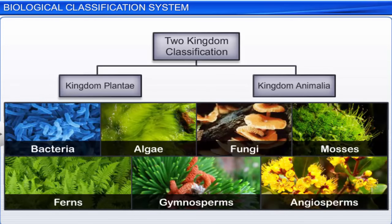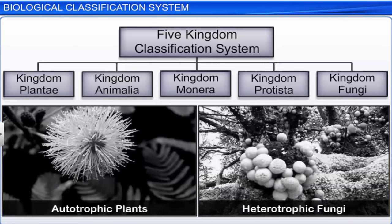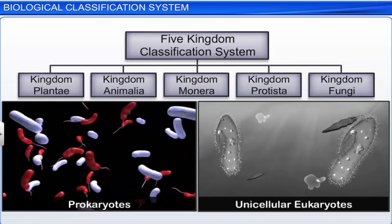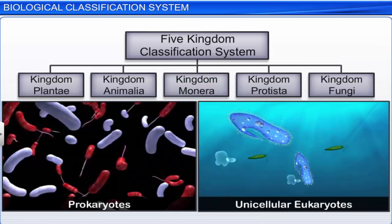The earlier classification systems included all bacteria, algae, fungi, mosses, ferns, gymnosperms, and angiosperms under the plants category, based on the common premise that each one had a cell wall. The five kingdom classification remedied this by placing organisms in different kingdoms based on differences in their characteristics. Based on differences in cell wall composition, heterotrophic fungi differ from autotrophic plants and were grouped under kingdom Fungi. All prokaryotic organisms were grouped together under kingdom Monera, and unicellular eukaryotic organisms were placed in kingdom Protista.